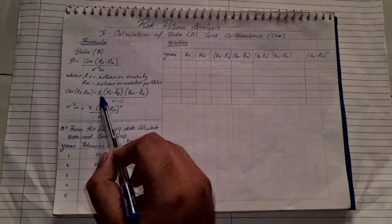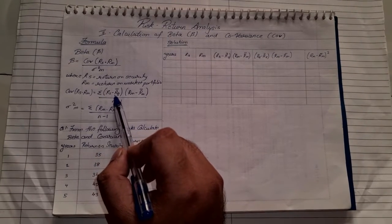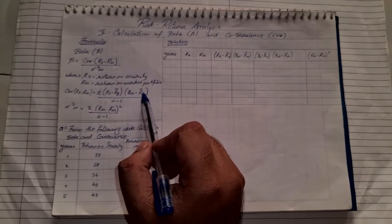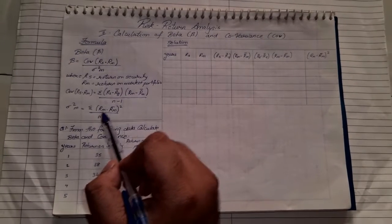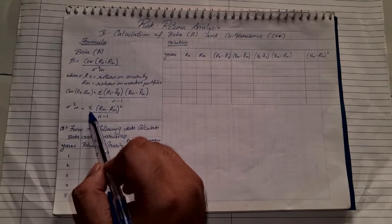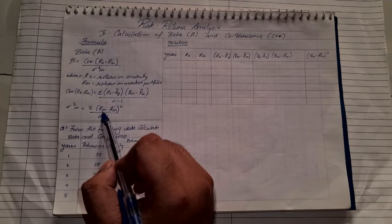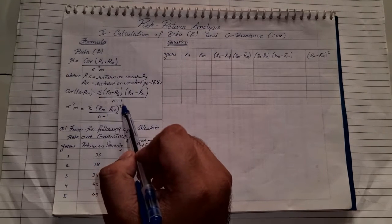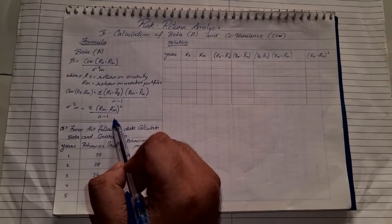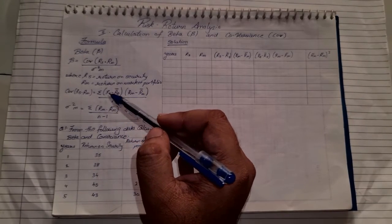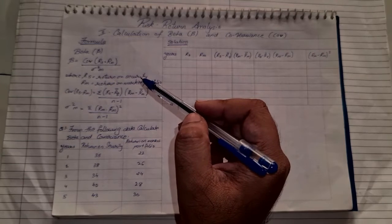Covariance formula is Σ(RS - R̄S)(RM - R̄M) / (N-1), and standard deviation square M formula is Σ(RM - R̄M)² / (N-1). Now looking at the formula it looks a little complicated, but while actually solving it, it is very simple.